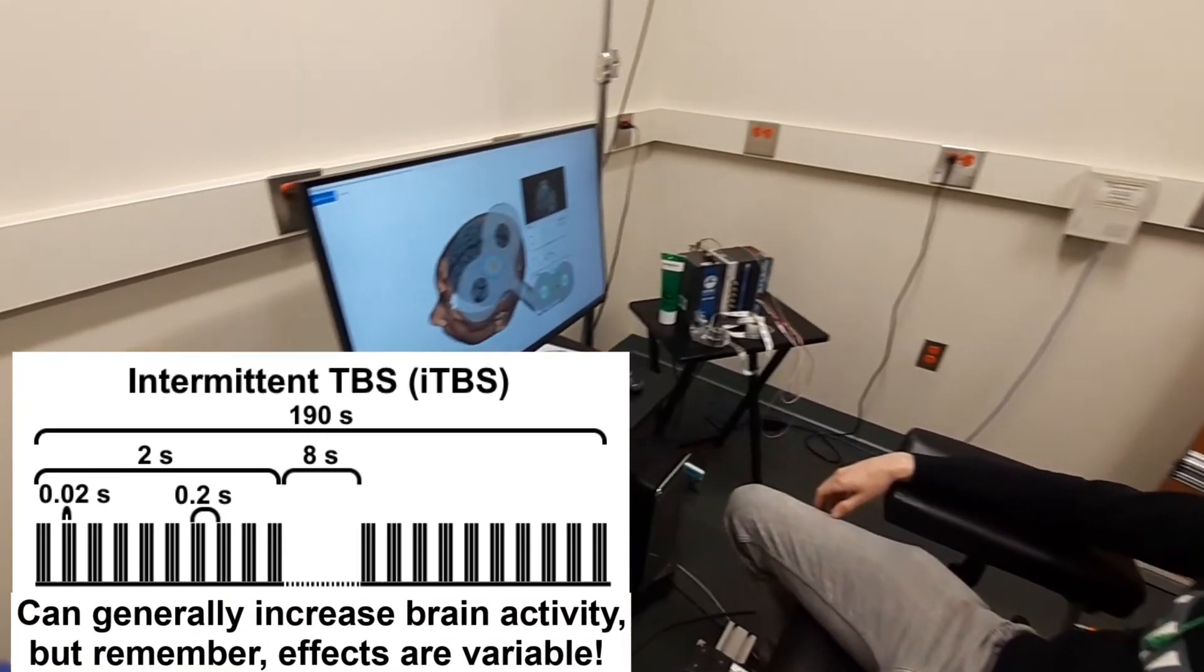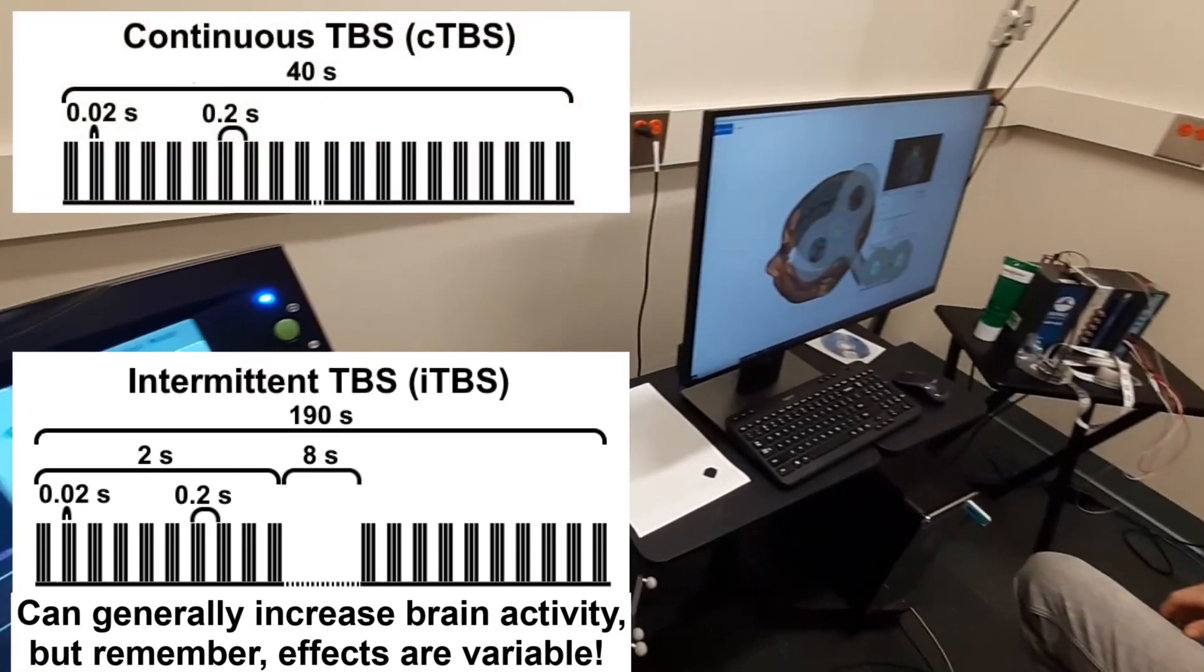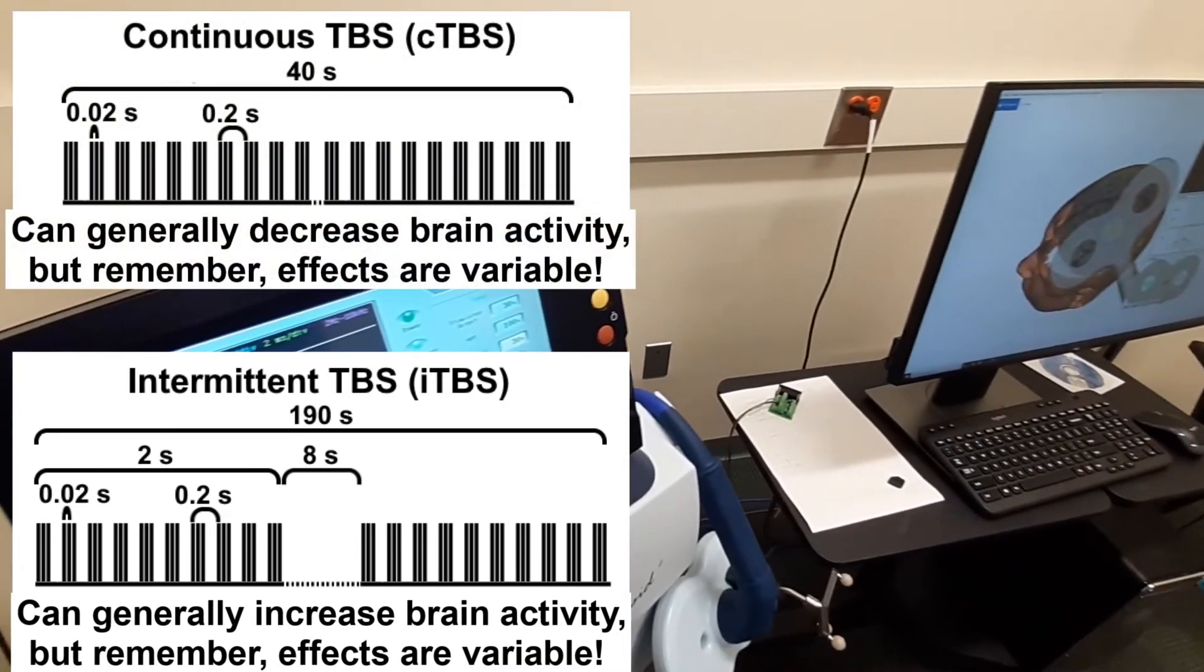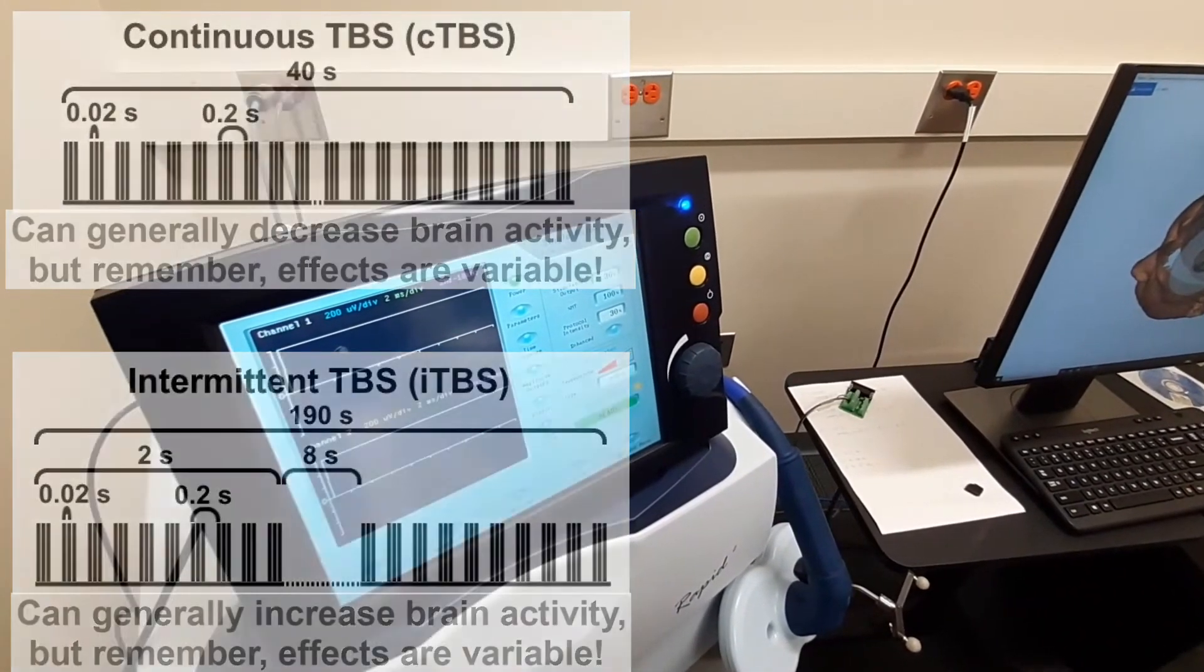Now, when theta burst stimulation is applied without breaks, so-called continuous theta burst stimulation, or CTBS, the brain activity is thought to decrease. CTBS only takes about 40 seconds to apply.